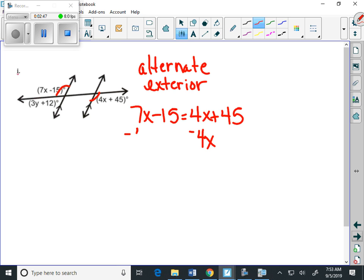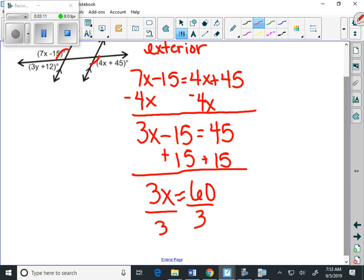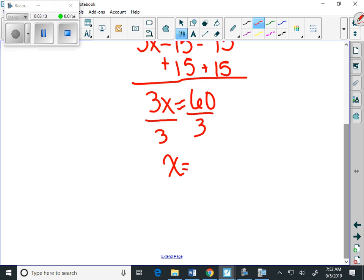Let's move our letter to the left. 7x minus 4x is 3x minus 15 equals 45. Add 15 to both sides, and get 3x equals 60. And then finally we'll divide both sides by 3, and x equals 20.